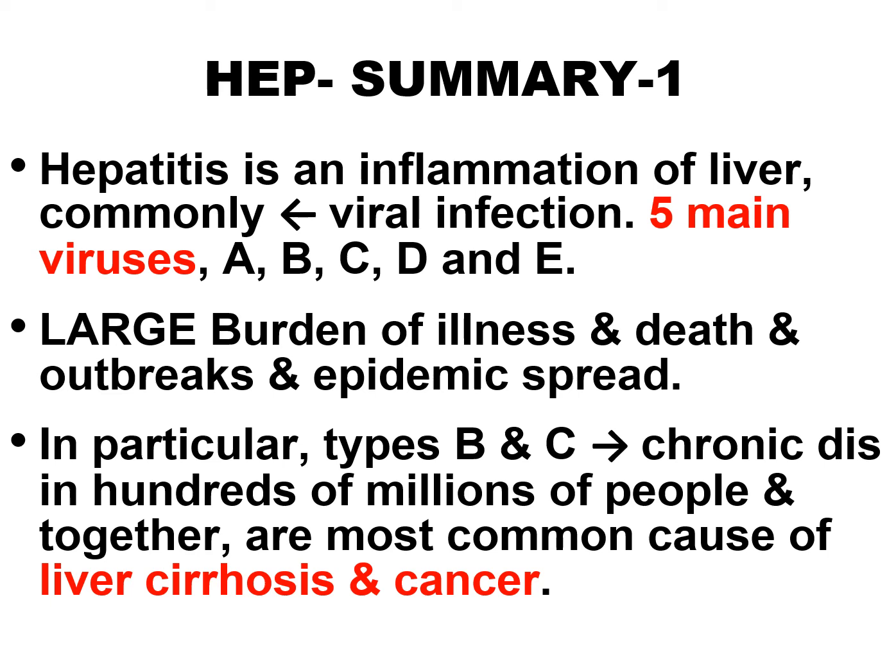Summary of Hepatitis as a whole: Hepatitis is an inflammation of the liver, commonly due to viral infection. Five main viruses: A, B, C, D, and E — and we will also explain G. There is a large burden of illness, death, outbreaks, and epidemic spread. In particular, types B and C lead to chronic disease in hundreds of millions of people and together are the most common cause of liver cirrhosis and cancer.